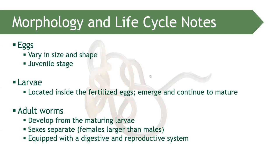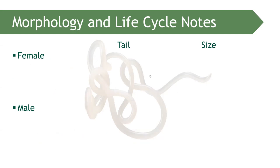Larvae are located inside the fertilized egg and emerge to continue maturing from rhabditiform to filariform. Adult worms develop from maturing filariform larvae. They have separate sexes — female and male — and are equipped with digestive and reproductive systems. You can determine the sex of a worm because adult worms have separate sexes.